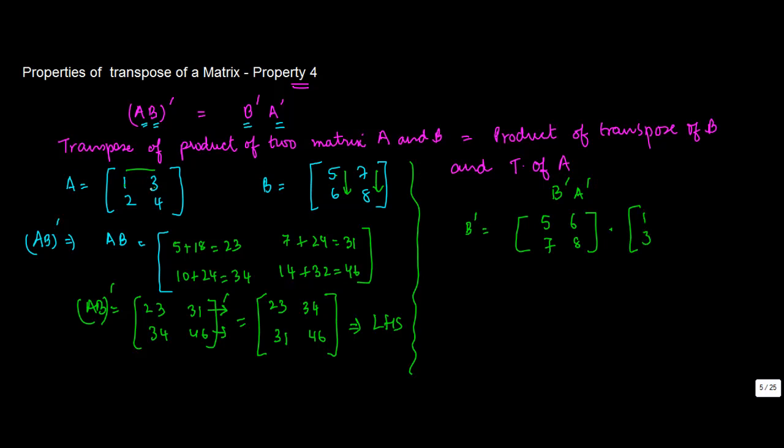So 5 into 1, 5, plus 6 into 3, 18. 5 into 2, 10, plus 6 into 4, 24. 7 into 1, 7, plus 8 into 3, 24. 7 into 2, 14, plus 8 into 4, 32.